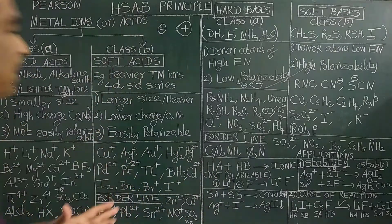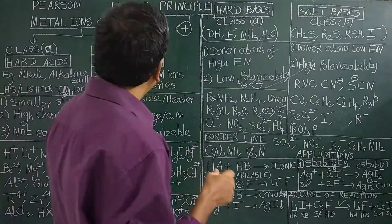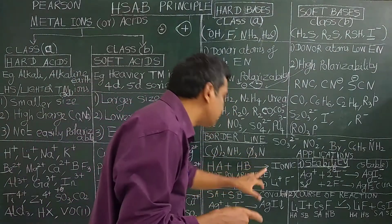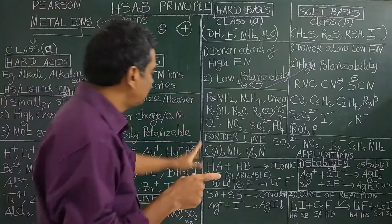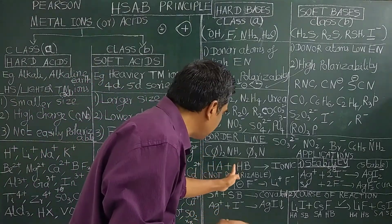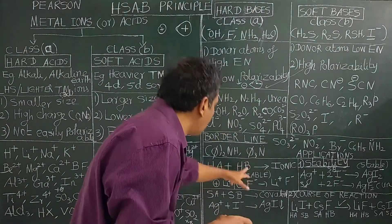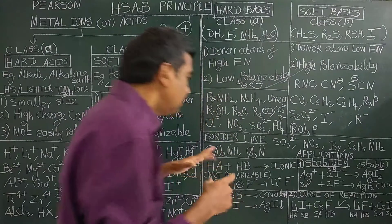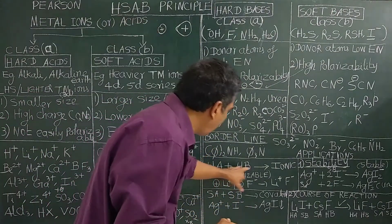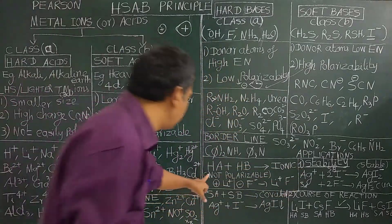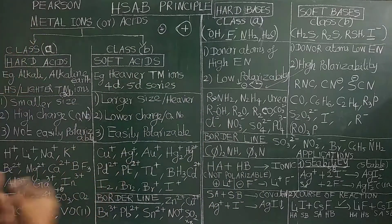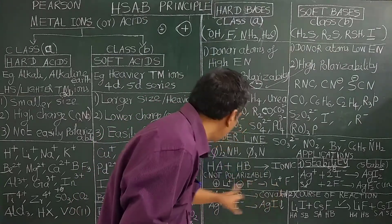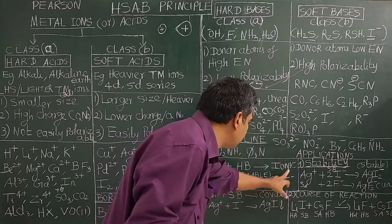What is the HSAB principle? According to the HSAB principle, hard acids prefer to interact with hard bases, and soft acids prefer to interact with soft bases. In the case of hard acid–hard base interaction, they give an ionic compound. For example, Li+ (hard acid) and F− (hard base) give lithium fluoride, which is a purely ionic compound because they are not easily polarizable.